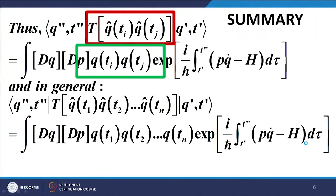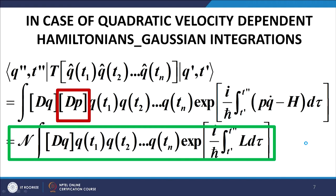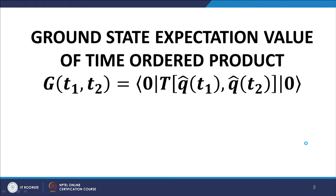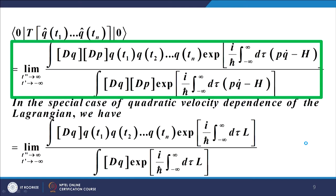We also worked out the operator product. In the case of a quadratic velocity-dependent Hamiltonian, the Gaussian integrals can be carried out explicitly and incorporated into a normalization, and we arrive at the expression in configuration space given in the green box. We also worked out the ground state expectation value of the time-ordered product, arriving at the expression given in the green box. So this is what we covered in the last lecture.